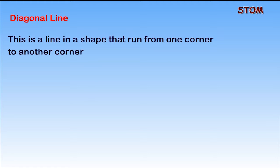Diagonal Line. A diagonal line is a line in a shape that runs from one corner to another corner. Let's quickly see some examples of diagonal lines.